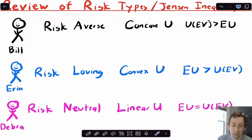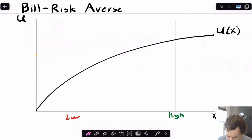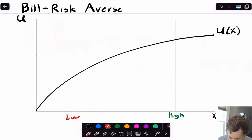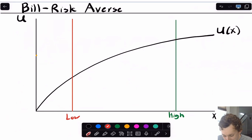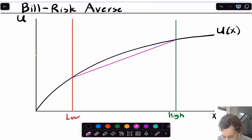So let's go through each of these people, talk about a lottery, talk about the expected value, find the certainty equivalence, and find the risk premium, and talk about whether or not it makes sense. For each of these people, let's say we've got a lottery with two different possible outcomes — a low outcome and a high outcome. Any lottery is just going to be some sort of convex combination between these two outcomes, so I'm just going to connect the low and the high with a line.